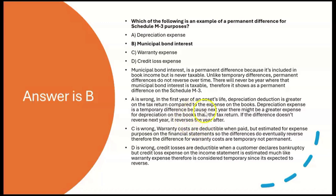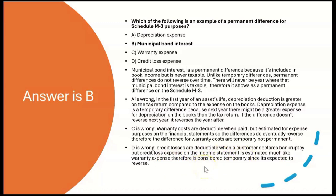A is wrong — Depreciation Expense is a temporary difference because in the first year of an asset's life the depreciation deduction on the tax return is greater than the book depreciation expense, and this will reverse over the asset's life. C is wrong — Warranty Costs are deductible when paid but estimated for expense purposes on financial statements, so the differences do eventually reverse, making them temporary. D is wrong — Credit Loss Expense is like bad debt expense: deductible when a customer declares bankruptcy but estimated on the income statement, so it is also a temporary difference expected to reverse.